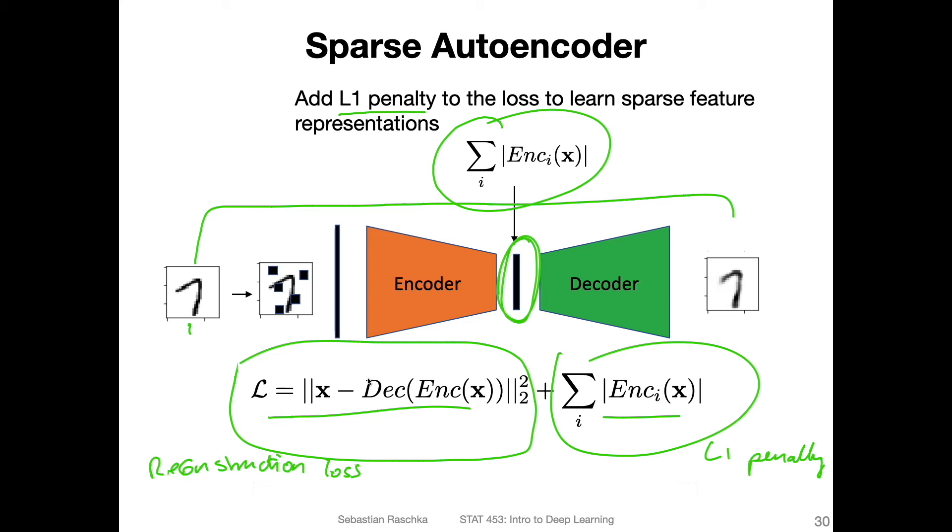So it's trying to keep the encoded space values small while also minimizing the reconstruction loss. This will result in sparse embeddings. If that's desired, there might be an application where that's useful.